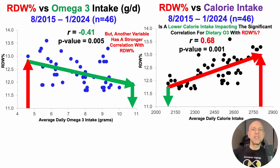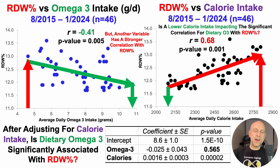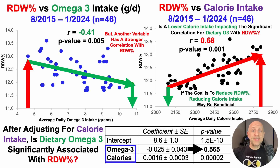This raises the question: is lower calorie intake driving the significant correlation for dietary omega-3 with the RDW percentage? After adjusting for calorie intake, is dietary omega-3 still significantly correlated with RDW? To address that, I derived a multivariate linear regression model including both omega-3 and calories. After adjusting for calorie intake, average daily omega-3 intake is not significantly correlated with RDW. This suggests that if the goal is to reduce the RDW, reducing calorie intake may be beneficial.